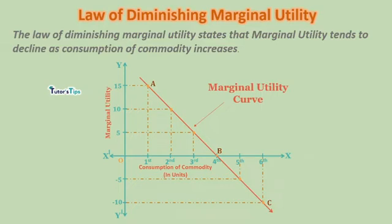The next topic is the Law of Diminishing Marginal Utility. What is this law? As more and more units of a commodity are consumed, the marginal utility derived from every additional unit must decline. The consumption must be of identical units and the consumption must be continuous.